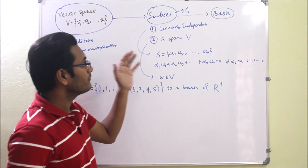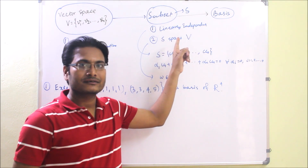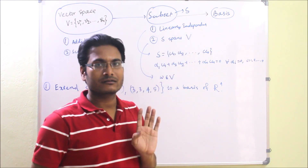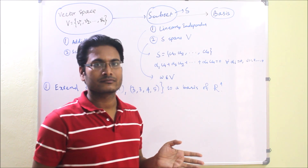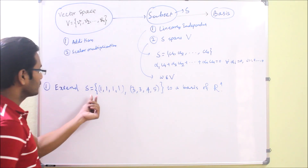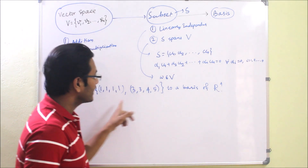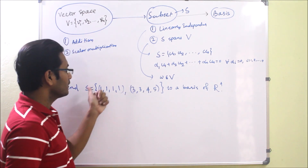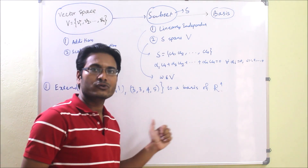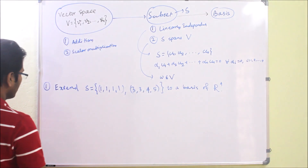One point we have to remember is that a basis is not unique. That means for a vector space there are many bases — we can have two or more bases. Now, S has two vectors but we are in R4, so there should be four vectors to form a basis. We have to see how to get those four vectors.